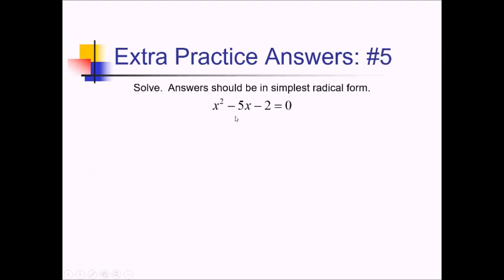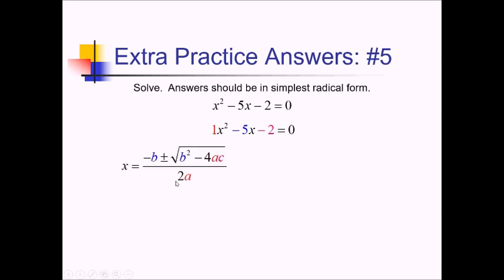For this problem, I noticed that I have a linear term, so I can't just solve by square rooting. The good news is that everything's already on one side. Looking at this, if you're trying to find factors of negative 2 that add up to negative 5, you will not be able to find those factors — so quadratic formula is all we can use here. Let me rewrite this with a 1 out in front of the x squared just so I really know what the coefficients are. Now let me write the quadratic formula: negative b plus or minus square root of b squared minus 4ac, all over 2a.